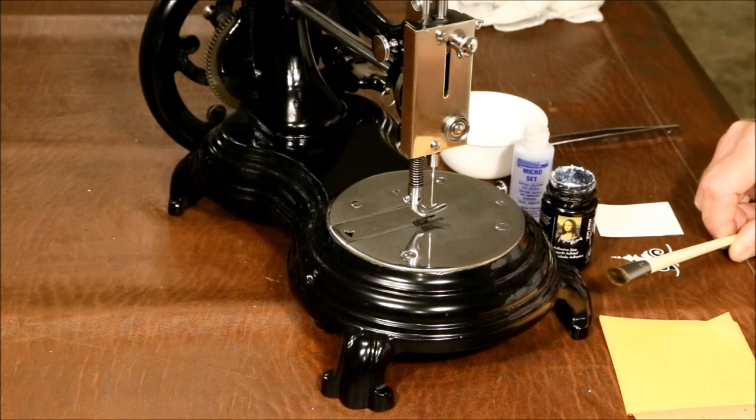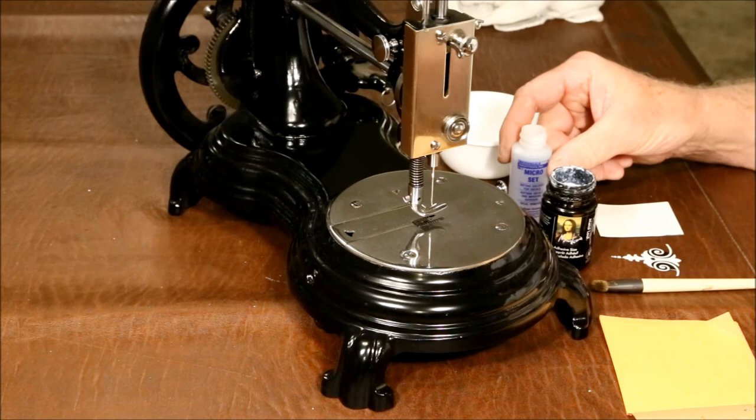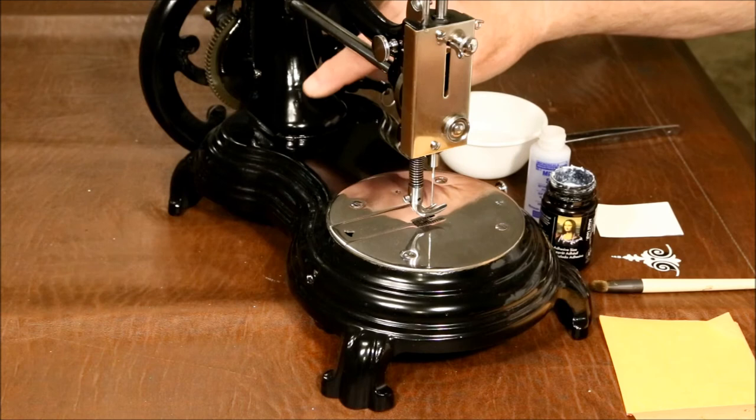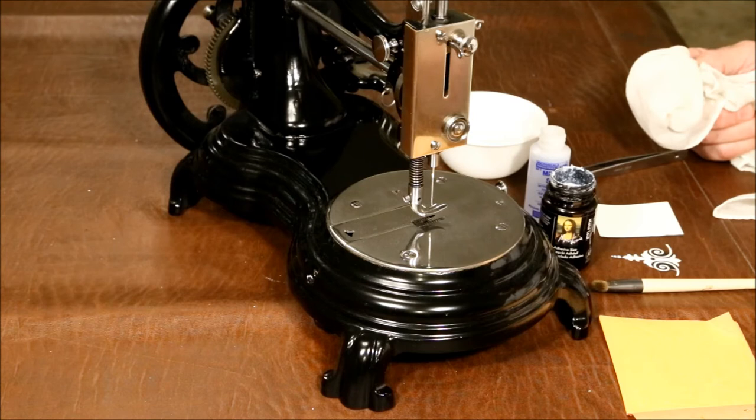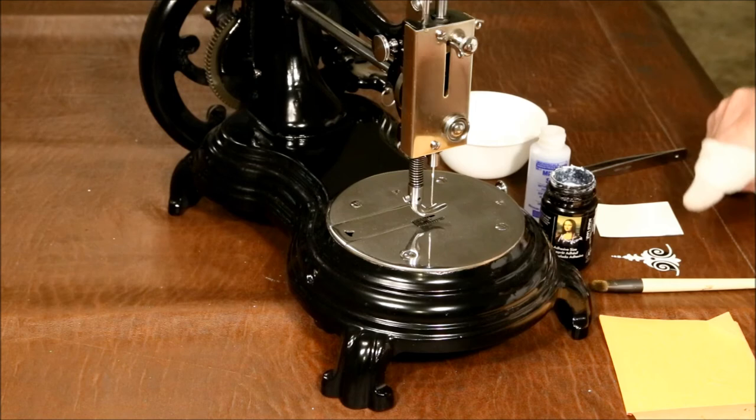I like using some Microset. This is a liquid that helps adhere the decal to the surface. Some water. A pair of tweezers. And an old, worn out handkerchief. I find this works about the best. You want something that's so worn, it's almost transparent. You don't want a new fuzzy one because that will transfer, as you'll see in a minute, potentially some fuzz to the back of the decal. We don't want that. So, let's get started.